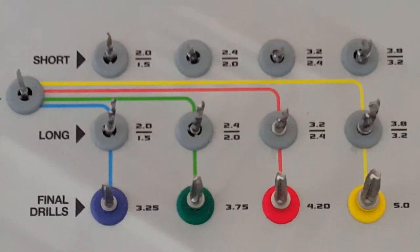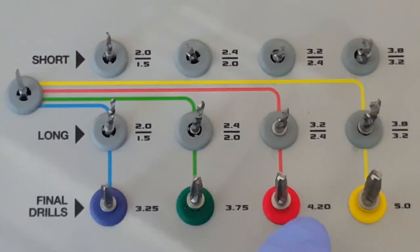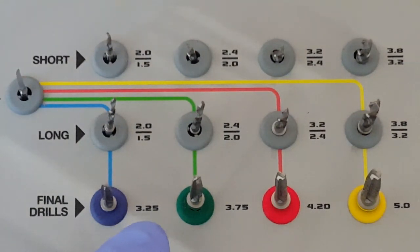The kit is designed for the placement of implants 3.25 millimeters in diameter, 3.75 millimeters in diameter, 4.2 millimeters in diameter, and 5 millimeters in diameter. You will note and see that each one of the implant diameters corresponds to a different color.